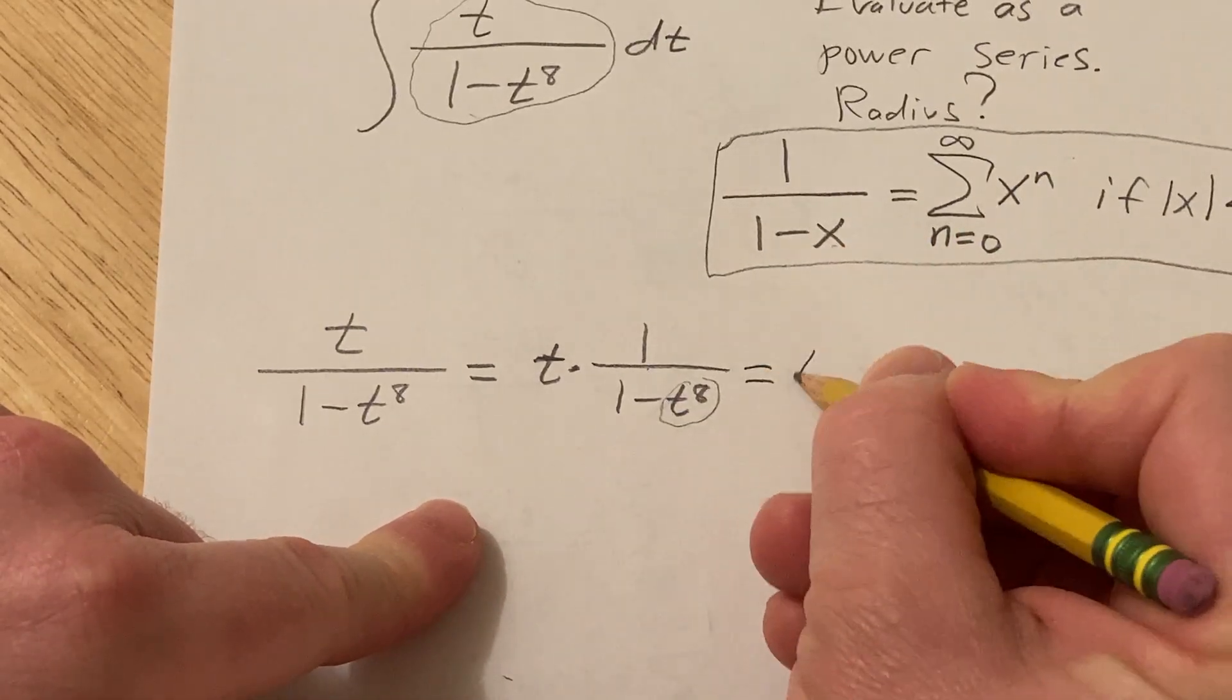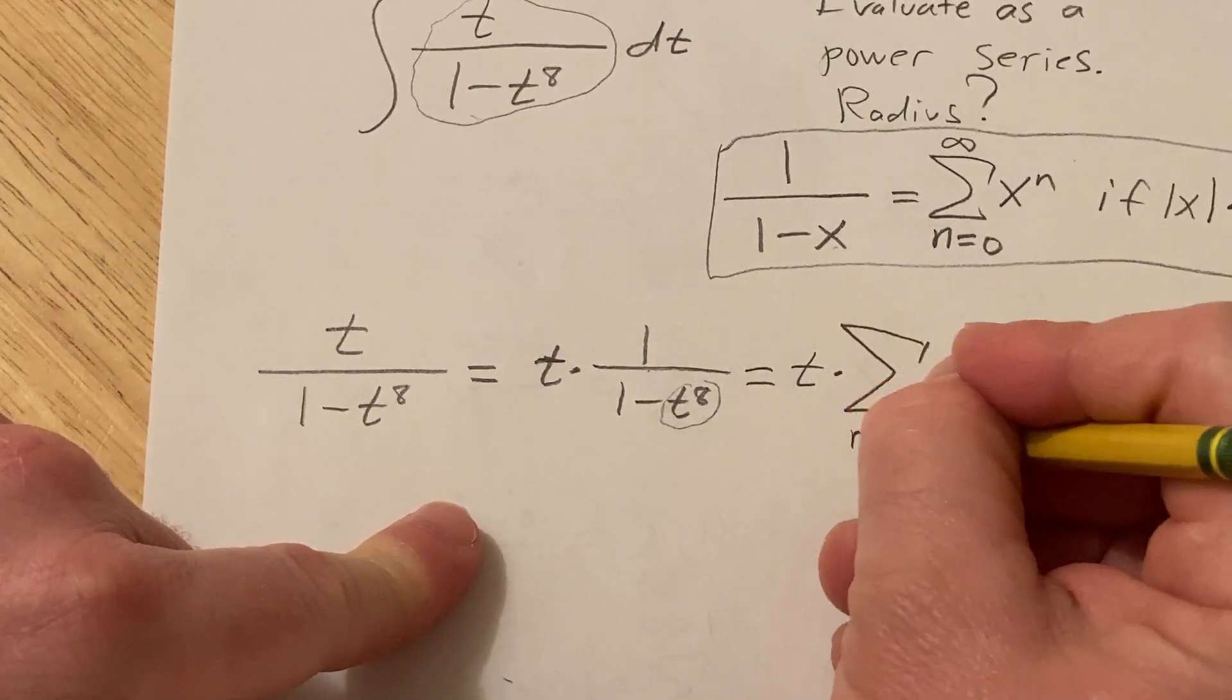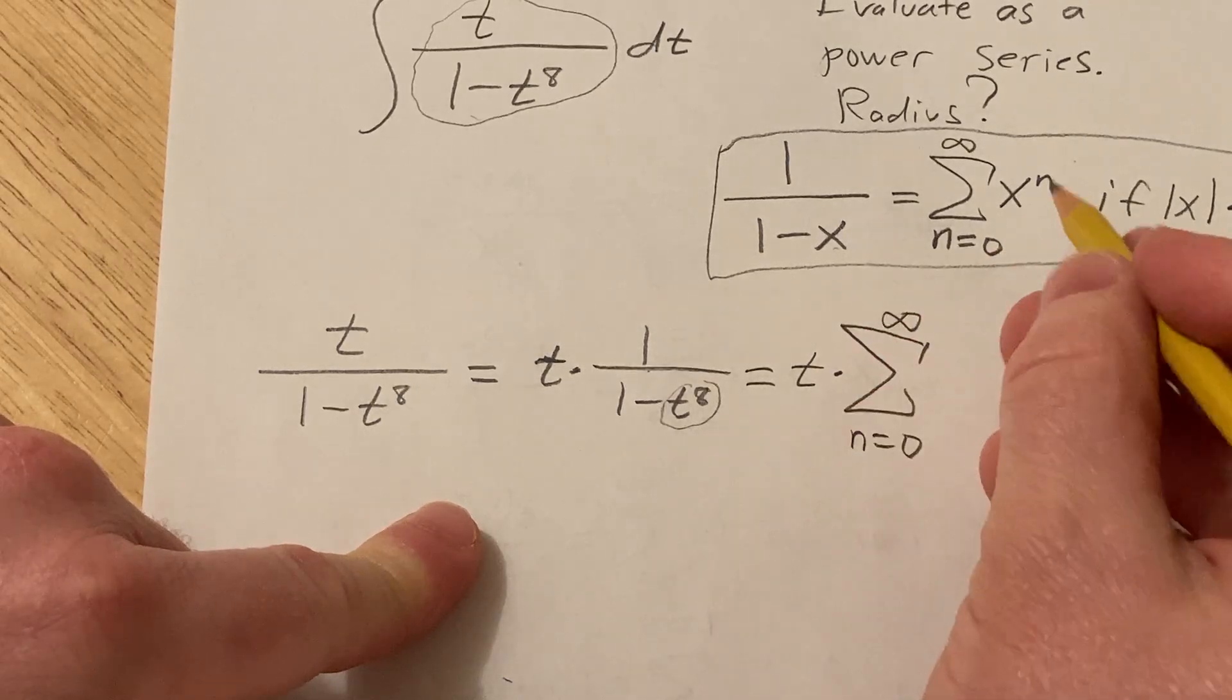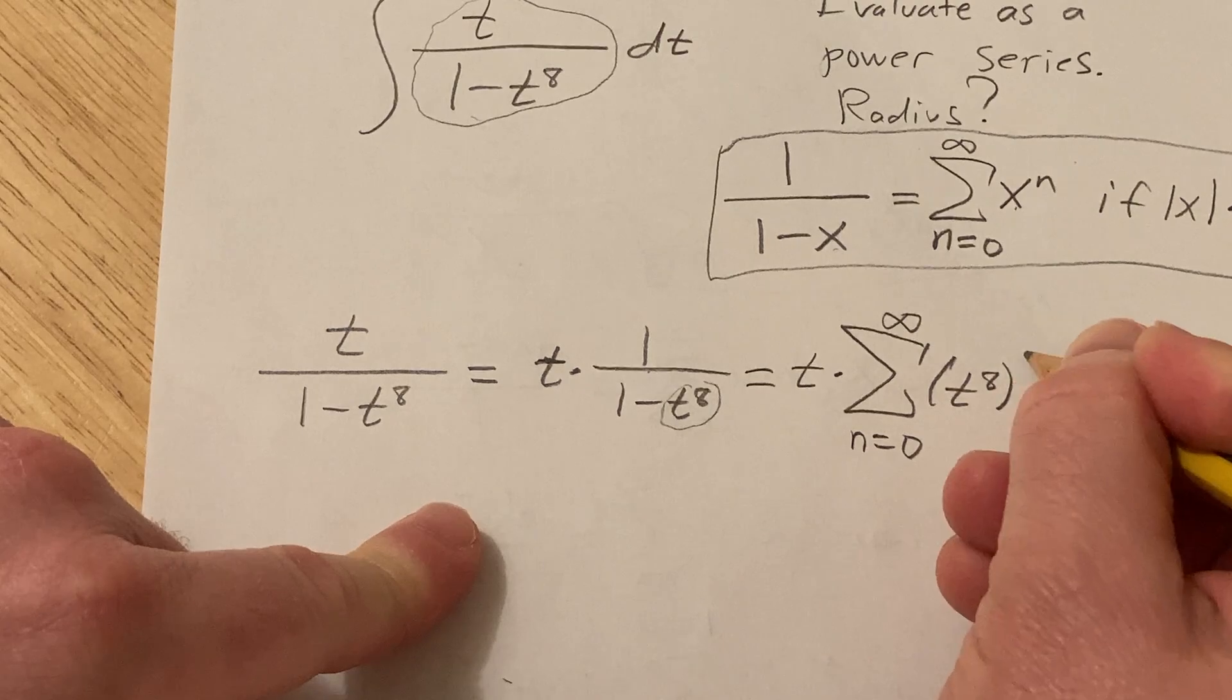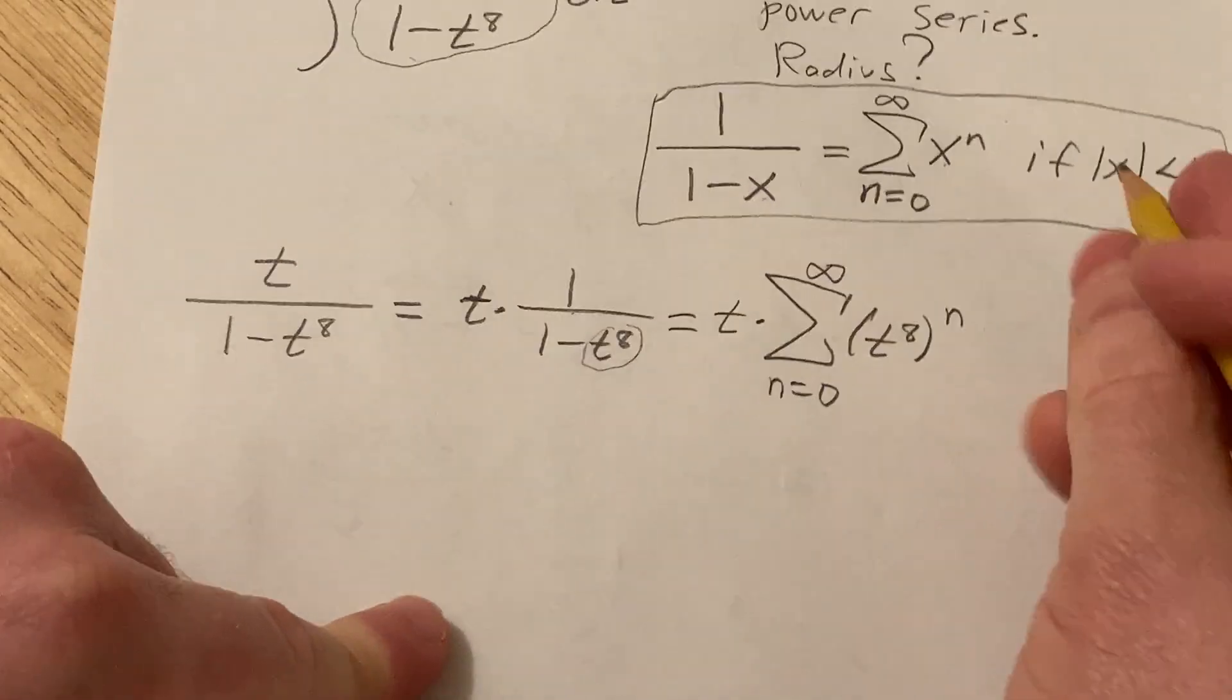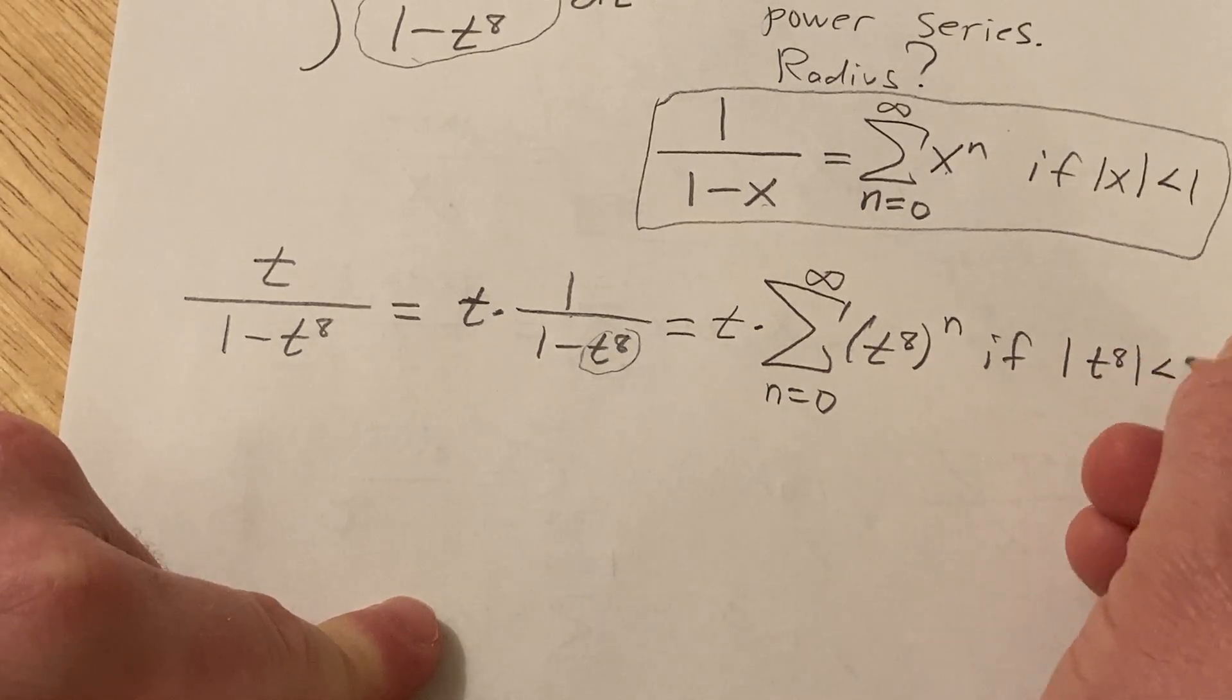So this is going to be t times the infinite sum as n runs from zero to infinity, and instead of x to the n it's going to be t to the 8 to the n. And this is going to be valid if the absolute value of t to the eighth is less than one.